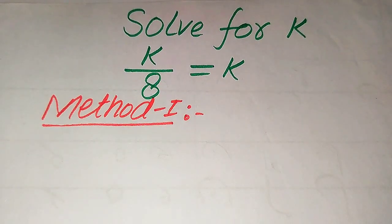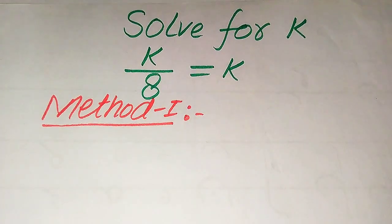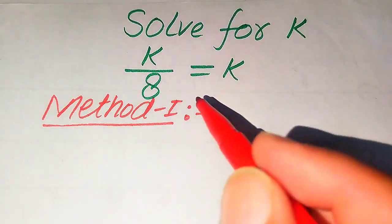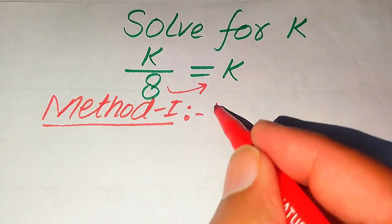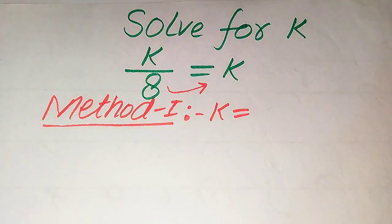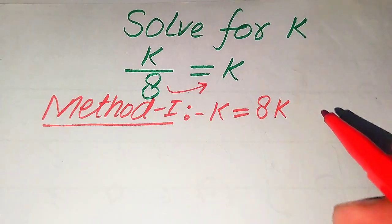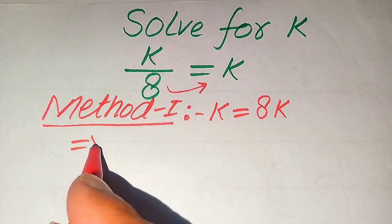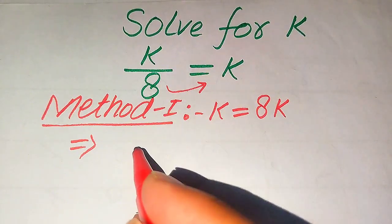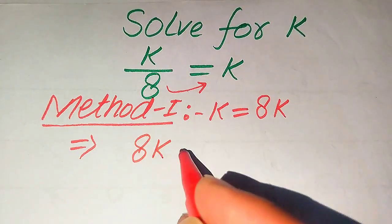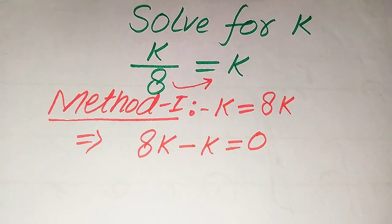Here in the first method, you see that 8 is on the left hand side. So we move this 8 to the right hand side. When we move 8 to the right hand side, it is multiplied by k and it becomes k equals 8 times k. In the next step we move this k to the right hand side, and it becomes 8k minus k, and this whole equation is equals to 0.